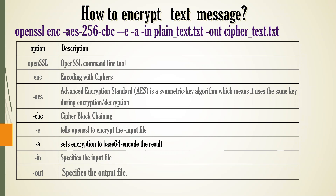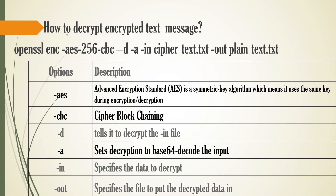To decrypt the message, simply change minus e to minus d and change the file text names. The only difference is: for encryption we use minus e, which tells openssl to encrypt the input file. Minus d tells openssl to decrypt the input file.